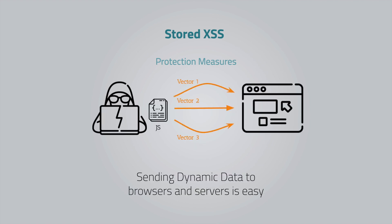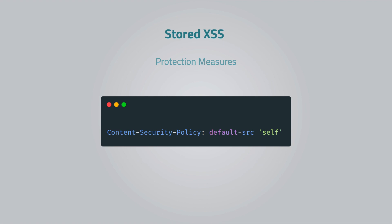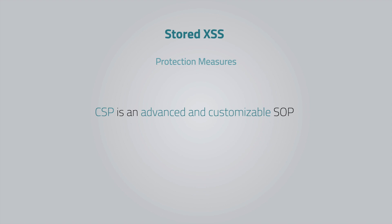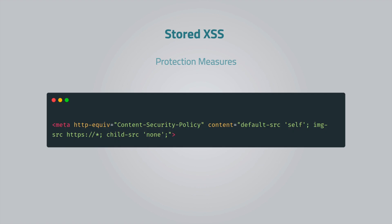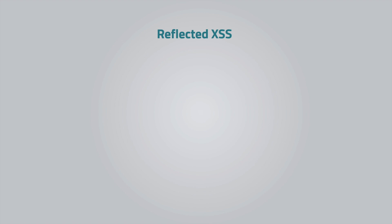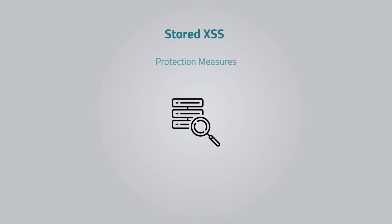Cross-site scripting attacks are possible because sending and executing JavaScript in the browser is easy. By using the Content Security Policy HTTP header in the response, you tell the browser to never execute inline JavaScript, or you can choose the type and origin of the resource you want to block. You can think of the content security policy as an advanced same origin policy, and you can also implement it using the HTML meta tag. For stored cross-site scripting attacks, regularly scanning your database for injected scripts is critical to make sure you're clean.